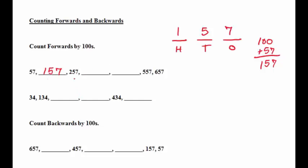If we add 100 to 157, the 1 in the hundreds place becomes a 2. So now we have 257. When we add 100 to 257, the 2 becomes a 3, and now we have 357.